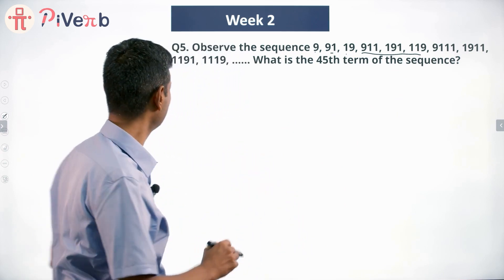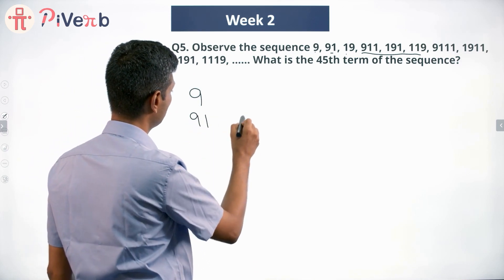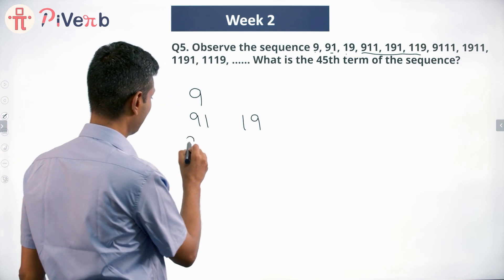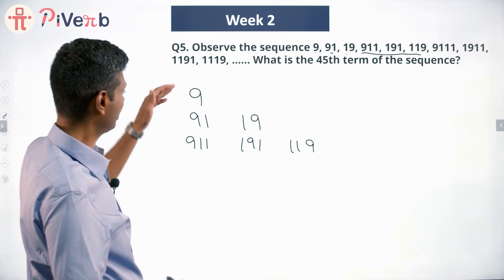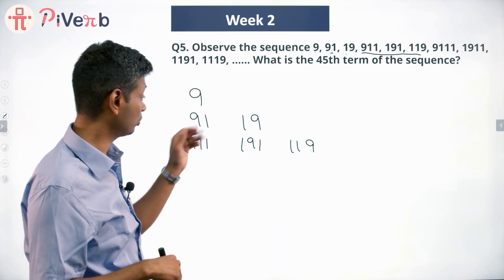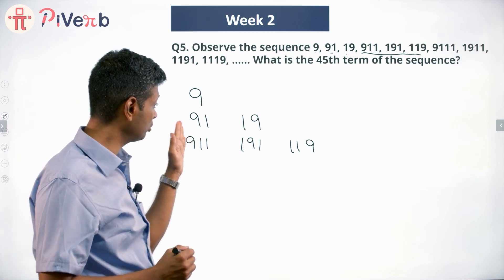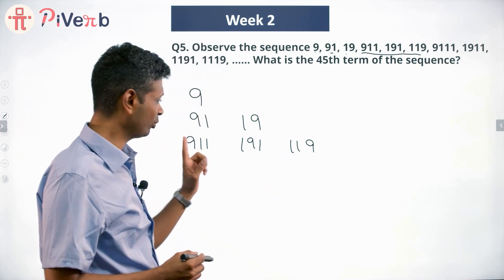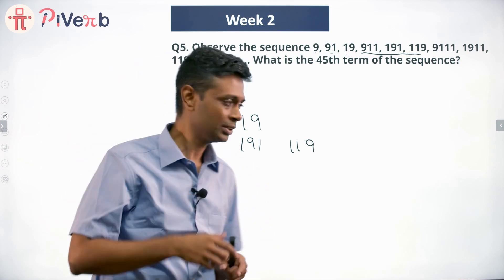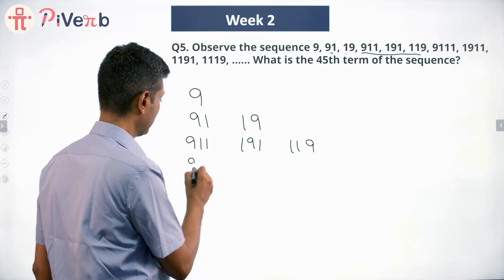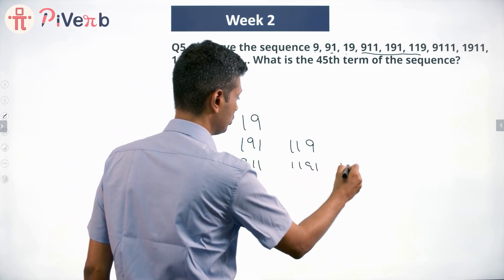Let me write it down slightly differently. I start with 9 for the first number; second number is 91; third number is 19. Then I have 911, 191, 119. For four-digit numbers: 9111, 1911, 1191, 1119. The 9 starts from the first digit and moves to the second, then the third, then the fourth.